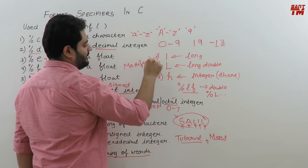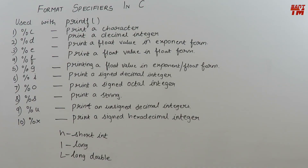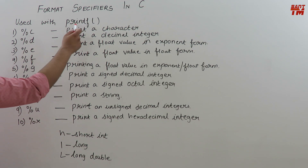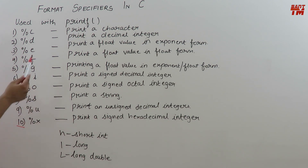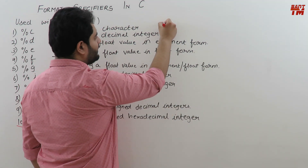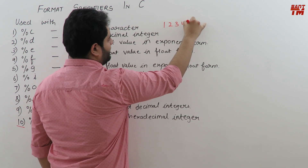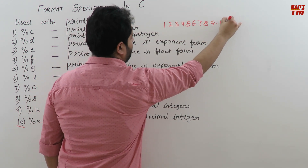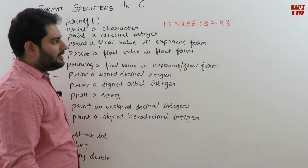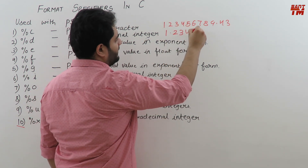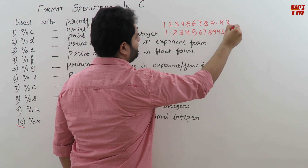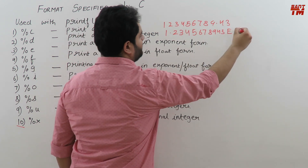Now let us discuss format specifiers for the printf statement. There are a total of 10 format specifiers. %c is used to print a character. %d for printing a decimal integer. %e for printing a float value in exponent form. For example, the number 123456789.43 in exponent form would be written as 1.23456789 43 e+8, meaning multiplied by 10 raised to the power 8.